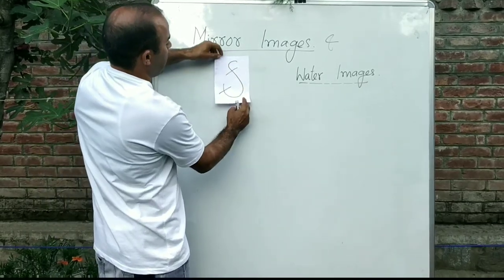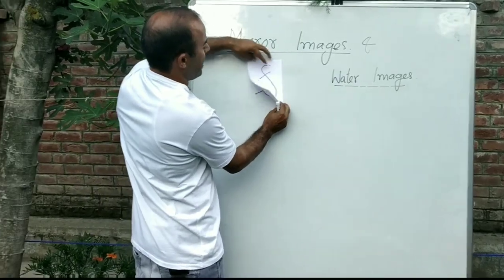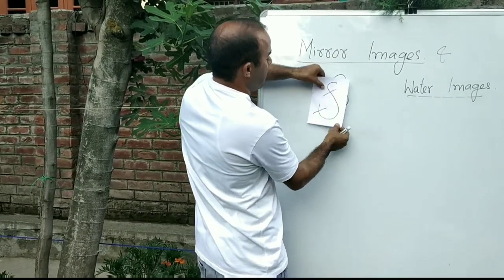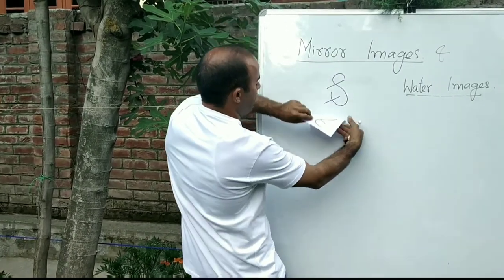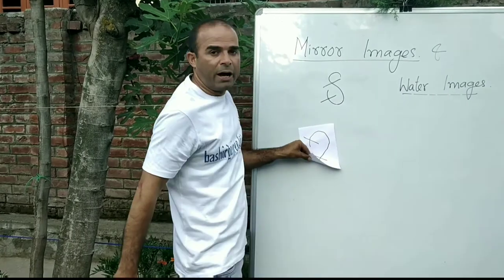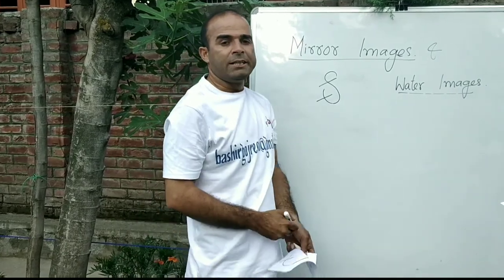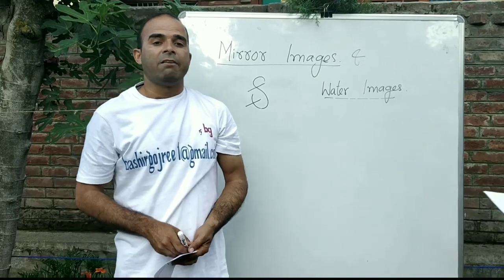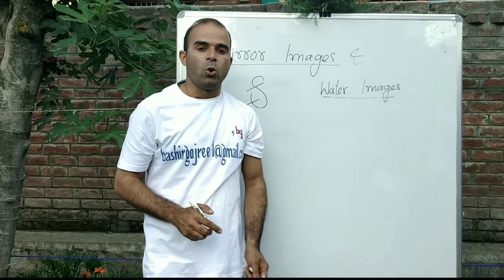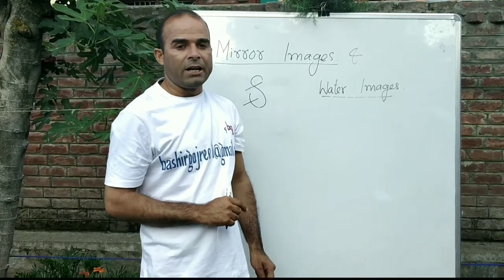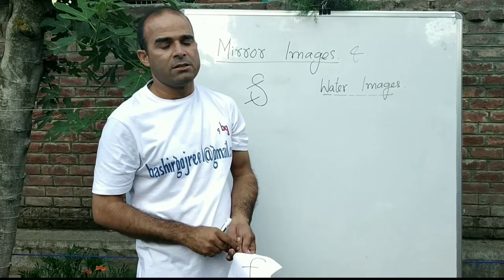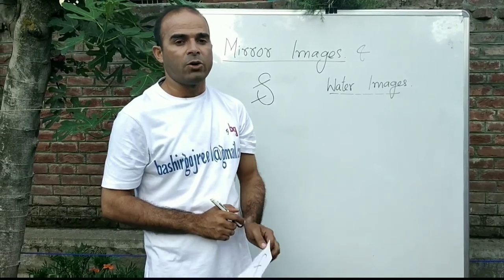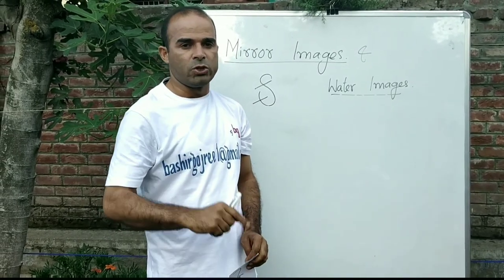So the mirror image is flipped horizontally and the water image is flipped vertically. I hope this trick will be useful to you. In the next video we will ask you questions on blood relations.